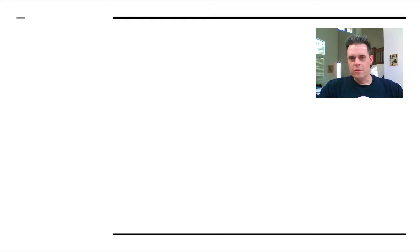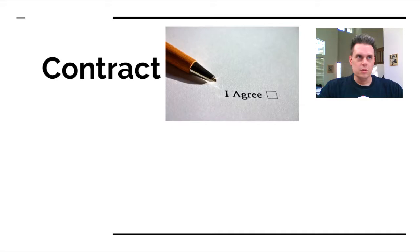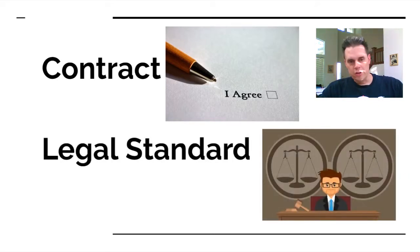So what are those somethings? The first one listed in the CBK is the contract. A contract is a formal agreement — it's usually written, and it may have legal force to it, or it may not. It may have monetary enforcement to it. Another one is a legal standard, and legal standards are set by government bodies.